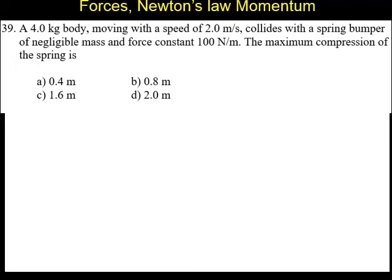Question number 39. A 4 kg body moving at a speed of 2 meters per second collides with a spring bumper of negligible mass and force constant 100 Newton per meter. The maximum compression of the spring alternatives are 0.4 meters, 0.8 meters, 1.6 meters and 2 meters.